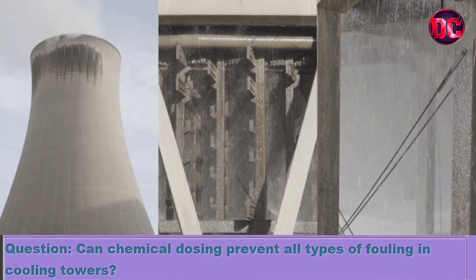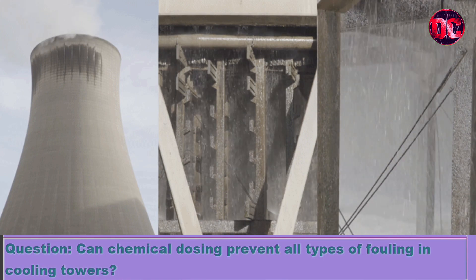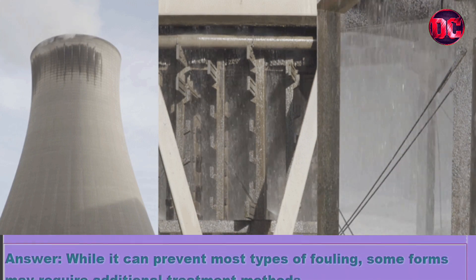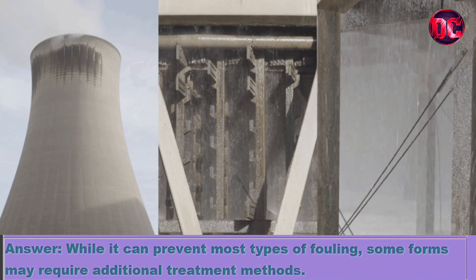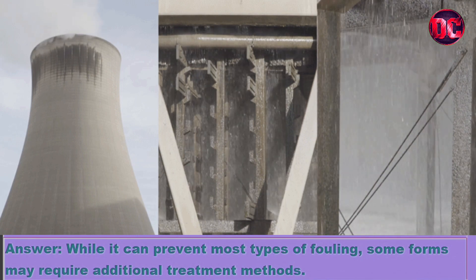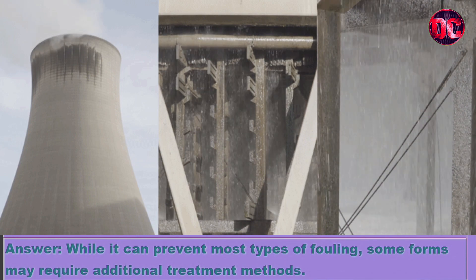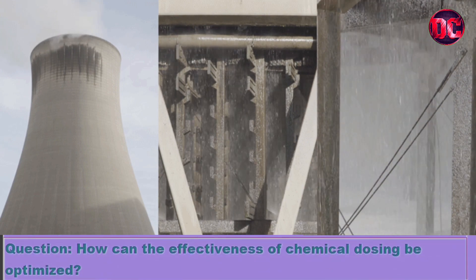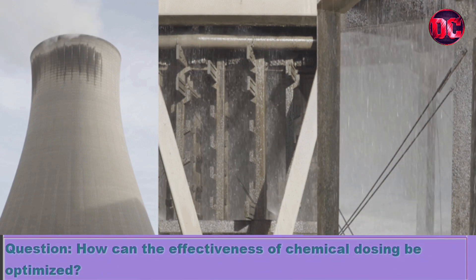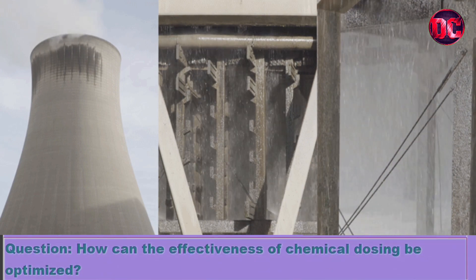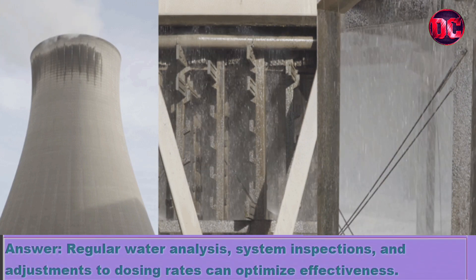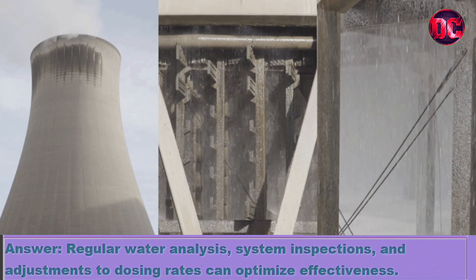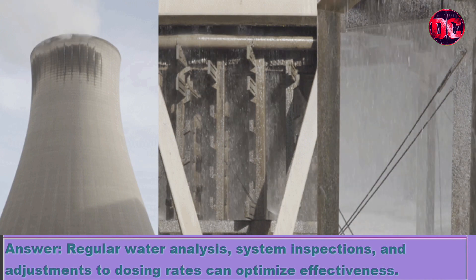Question: Can chemical dosing prevent all types of fouling in cooling towers? Answer: While it can prevent most types of fouling, some forms may require additional treatment methods. Question: How can the effectiveness of chemical dosing be optimized? Answer: Regular water analysis, system inspections, and adjustments to dosing rates can optimize effectiveness.